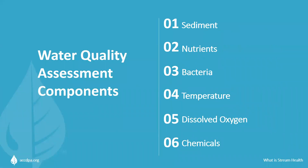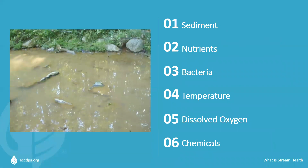The water quality component addresses six categories: sediment, nutrients, bacteria, temperature, dissolved oxygen, and chemicals. Sediment is delivered to the stream through the erosion of upland areas and from the stream banks. Too much sediment may cover gravel on a stream bed, smothering eggs previously deposited in the gravel by spawning fish, or burying the substrate or stream bottom needed by aquatic insects. Measuring the amount and size of sediment in stream water and on the stream bed helps determine whether there is an excess and where it may be coming from.